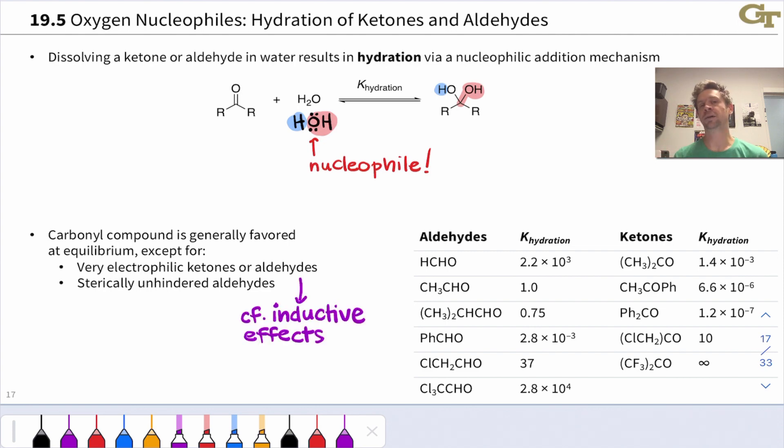Generally, the carbonyl compound is favored over the hydrate, so we can dissolve or mix, for example, acetone with water, and for the most part, the structure will remain acetone. It will not undergo hydration, and a good example of that is the equilibrium constant for hydration of acetone is only about 10 to the negative third power, so very little hydration of acetone in equilibrium when it's mixed with water.